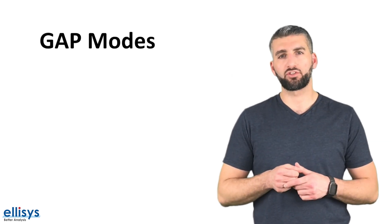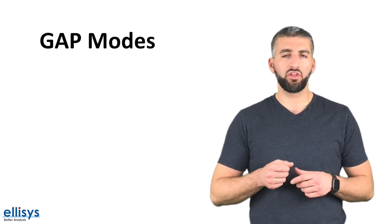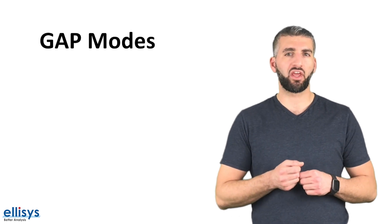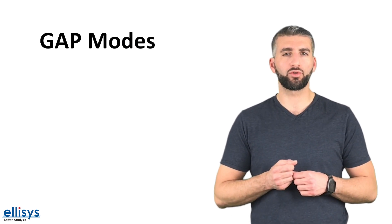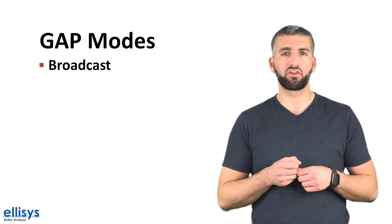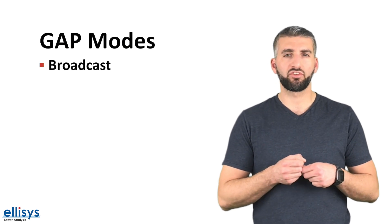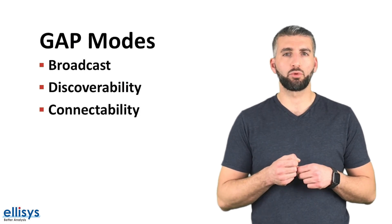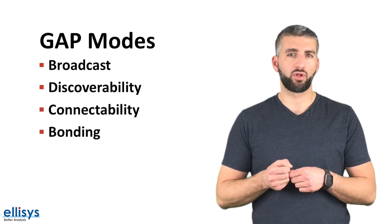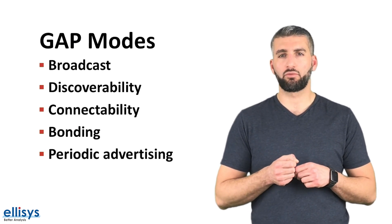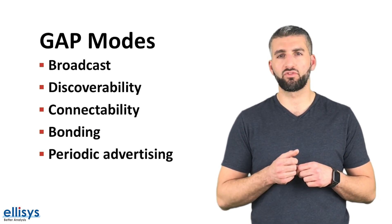The GAP roles describe the type of device, but within GAP we also have different modes. A mode is a state that a device can switch to in order to achieve a certain goal, so it can be temporary. Some of the different modes include broadcast mode, where the device sends out advertisements but does not allow a connection; discoverability; connectability; whether it's bonded to another device for a secure connection; and the periodic advertising mode, which was introduced in Bluetooth 5.